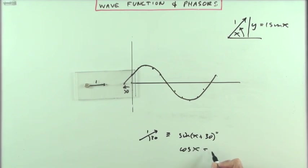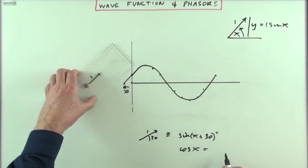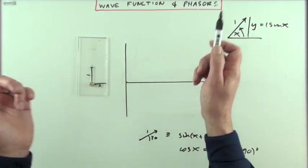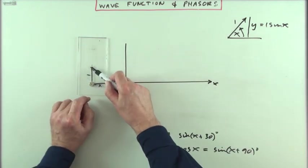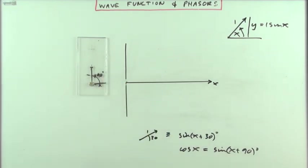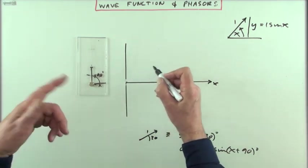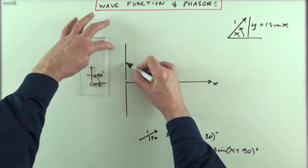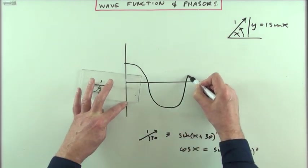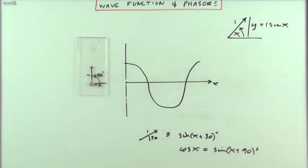That means the other familiar curve: cos(x) would be generated by starting at the top. Cos(x) must be the same as sine(x + 90). If you take a phasor of length 1 with a starting position 90 degrees round from the horizontal baseline and then start turning, this will generate a cosine curve.